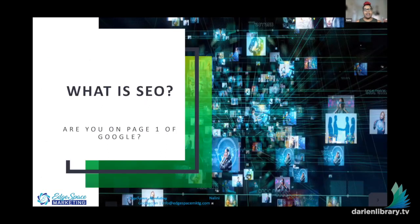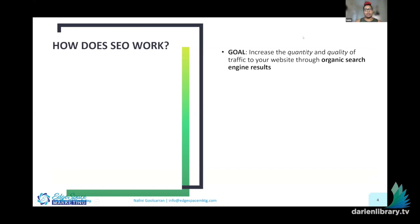Let's talk about SEO at a very high level. The question really is: are you on page one of Google? The goal is to increase the quality and quantity of traffic to your website through organic search engine results. Quality and quantity are very important. Traffic to your website is good, but not all traffic is good — you can have a hundred users who are your potential clients, but also a thousand people showing up for the wrong business or the wrong region.